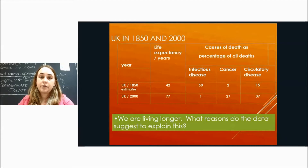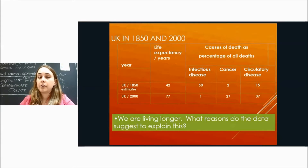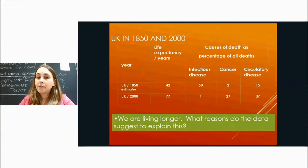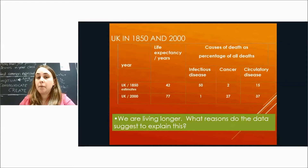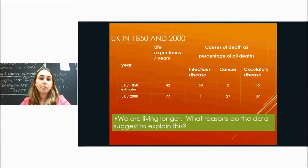From 1850 to 2000, a table shows life expectancy in years. In the 1850s people only lived to about 42 years old; by the year 2000 in the UK the average age was about 77. In the 1850s most people died from infectious diseases — viruses and bacterial diseases — and very few from cancer or circulatory disease. Now, well over 50% of deaths come from cancer and circulatory diseases combined. Why do you think more people now die from those conditions whereas in the 1850s they died from infectious disease?